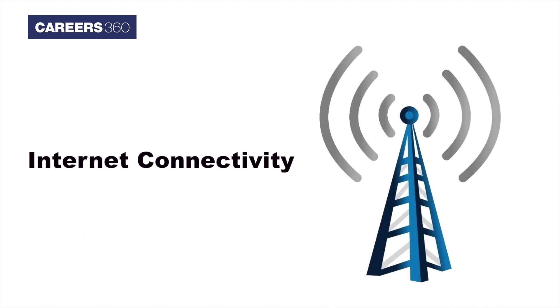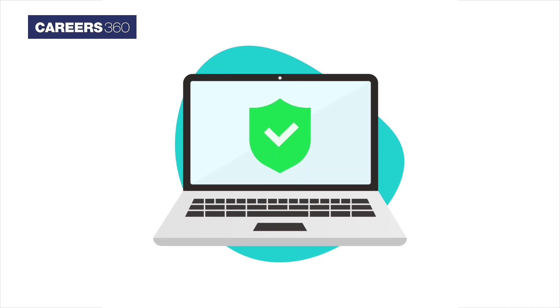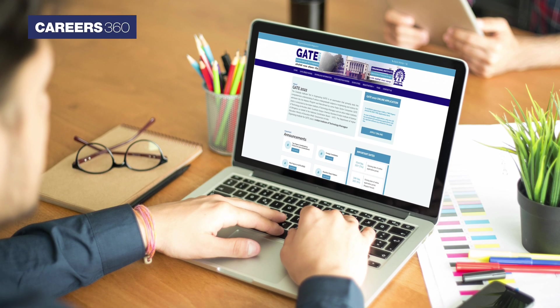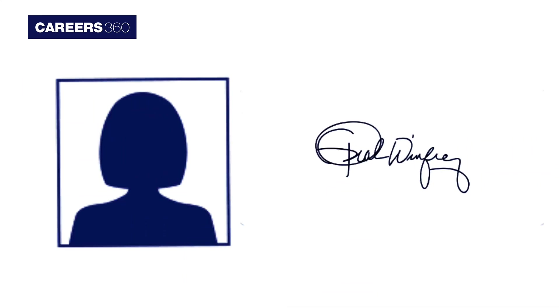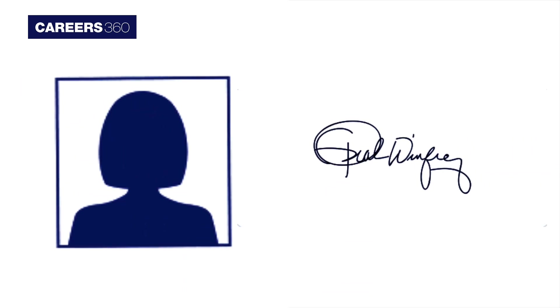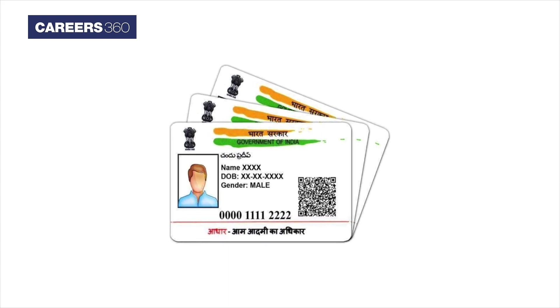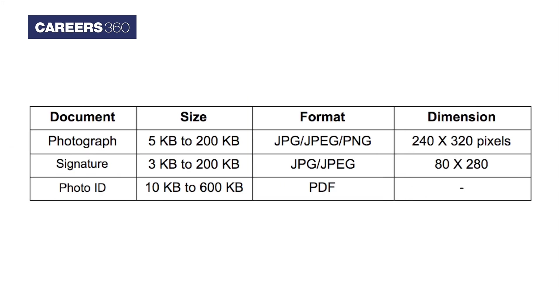Before proceeding for the GATE 2022 registrations, applicants need to check the internet connectivity and system requirements clearly. The GATE application form process involves registration, filling the application form, uploading of photograph, signature, and other documents, and payment of the application fee. Applicants should keep ready the scanned photograph, signature, and a valid photo ID proof document as per the specifications mentioned in the table.